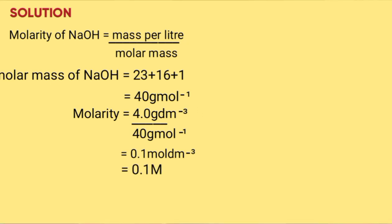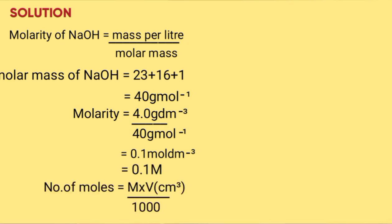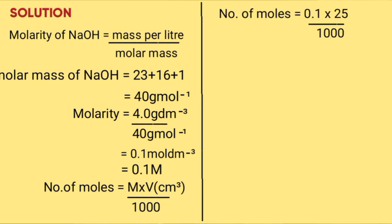Number of moles of sodium hydroxide is molarity times volume over 1000, which is 0.1 times 25 over 1000, giving 0.0025 moles.